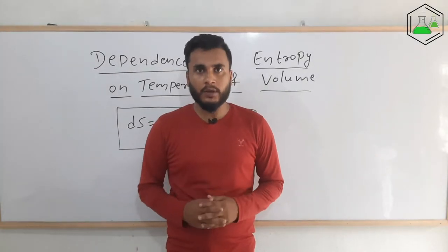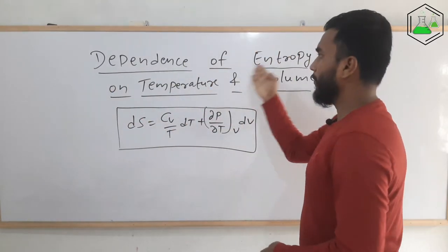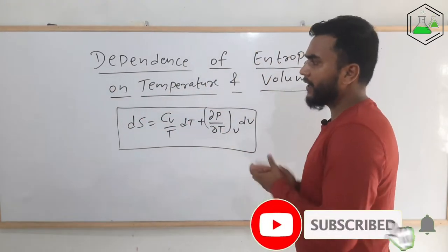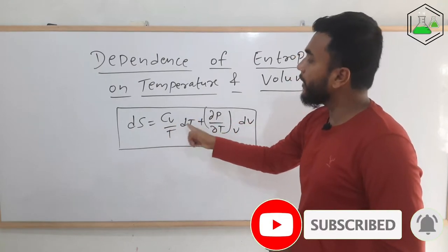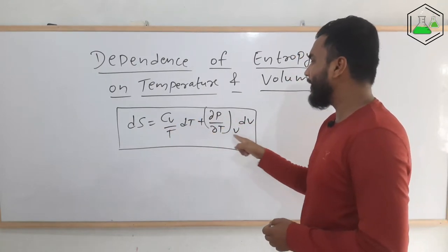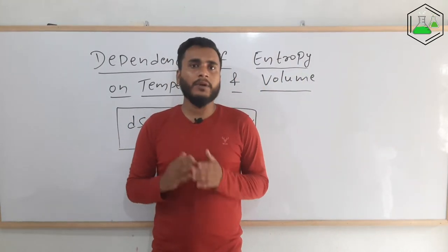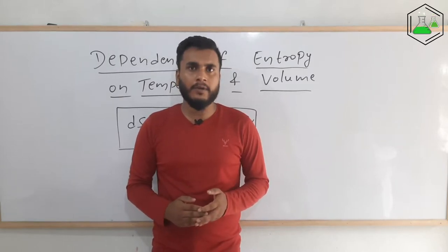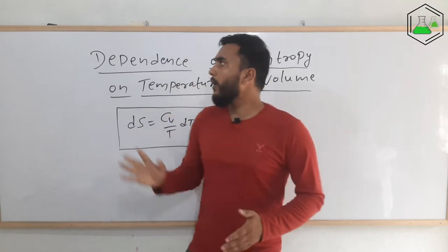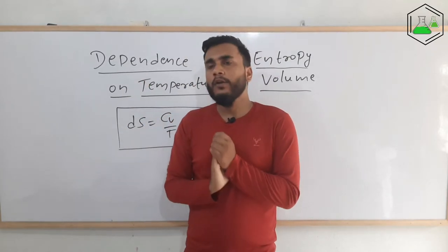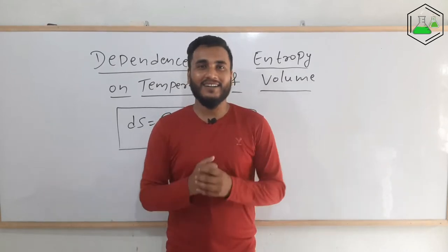Hello friends, welcome to GT Science Tutorial. In this video I am going to explain the dependence of entropy on temperature and volume — that is, we are going to derive the formula: dS = (Cv/T)dT + (∂p/∂T)_V dV. This is one of the most important derivations in thermodynamics, frequently asked in examinations. We will also see how the formula changes for an ideal gas.